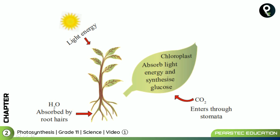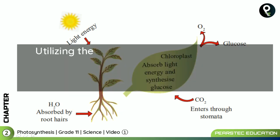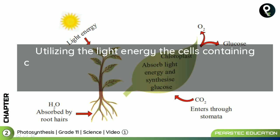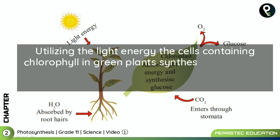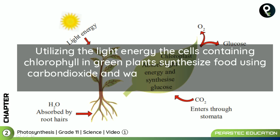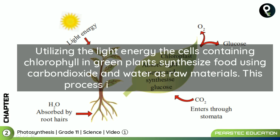It also requires chloroplasts or chlorophyll, which absorb light energy and synthesize glucose. The byproducts oxygen and glucose are produced only when all requirements are fulfilled. The definition from the book: utilizing the light energy, the cells containing chlorophyll in green plants synthesize food using carbon dioxide and water as raw materials. This process is called photosynthesis. This definition is a little different from previous classes.